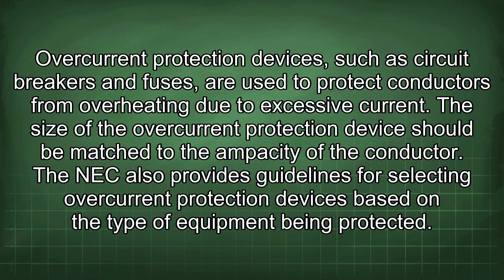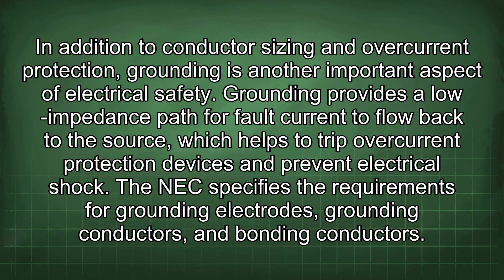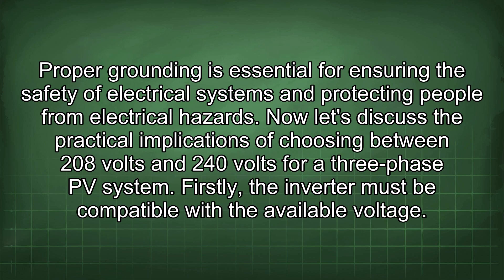The NEC also provides guidelines for selecting overcurrent protection devices based on the type of equipment being protected. In addition to conductor sizing and overcurrent protection, grounding is another important aspect of electrical safety. Grounding provides a low-impedance path for fault current to flow back to the source, which helps to trip overcurrent protection devices and prevent electrical shock. The NEC specifies the requirements for grounding electrodes, grounding conductors, and bonding conductors, which are essential for ensuring the safety of electrical systems.